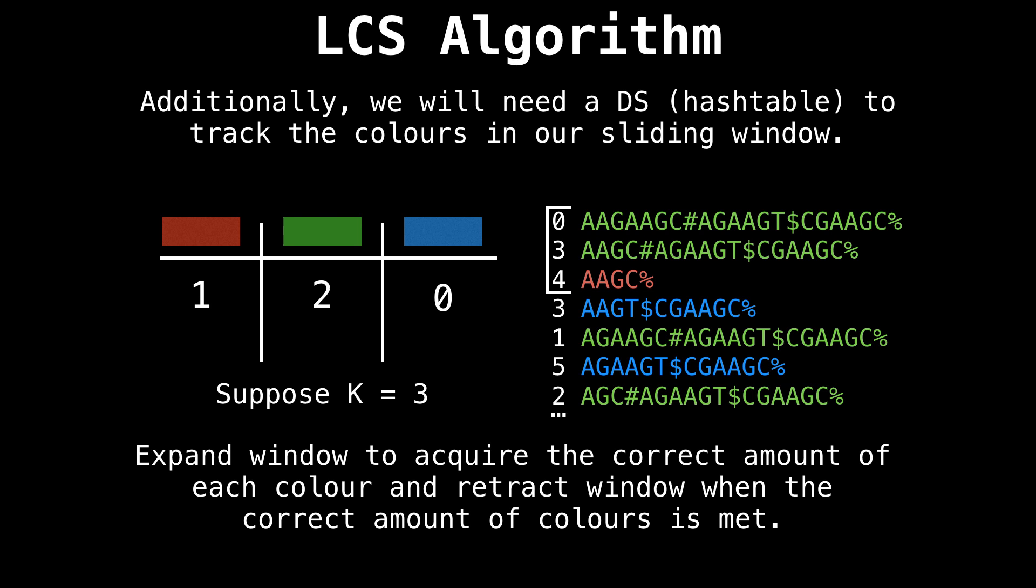Right now you can see that our window is missing some blue. So our rule when we're missing a certain color is to expand the window down. And when we already meet the criteria, we shrink the window down.